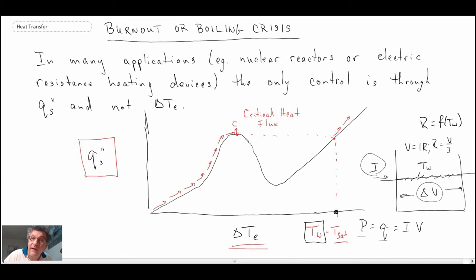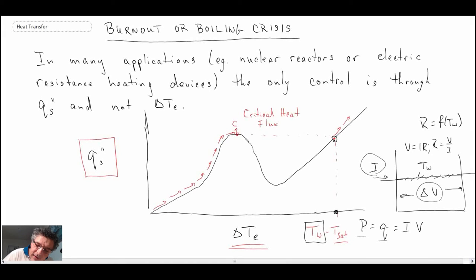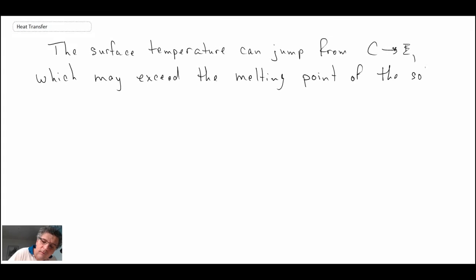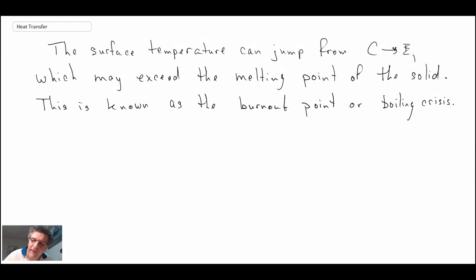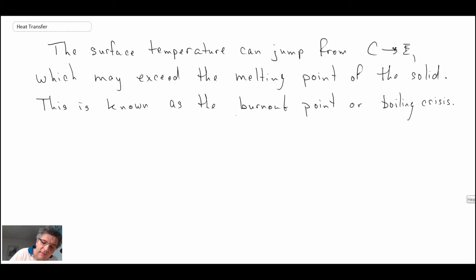Now, Nukiyama was very persistent, and I'll tell you how he got around this problem in a moment, but let me make a comment. So, the surface temperature can jump from C to E, and I didn't put E here, but this is E, and this was C. What happens is that we can jump from C to E. When we look at our boiling curve, we can quickly go from C all the way up to E, and this can exceed the melting point temperature of the wire, and that's why it's sometimes called the burnout point, or the boiling crisis. You do not want to operate your system there, because if you're exceeding the melting points of the material, it will melt down, and that happens with nuclear reactors, and it can also help it happen with electric resistance heating devices like Nukiyama was using.